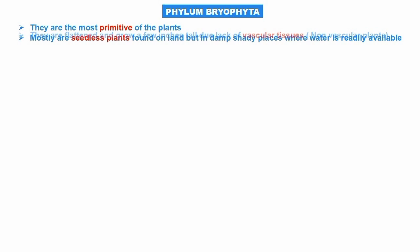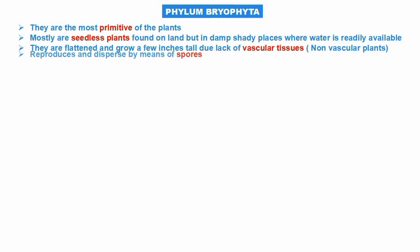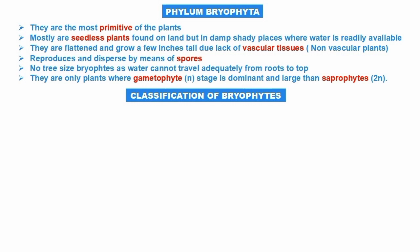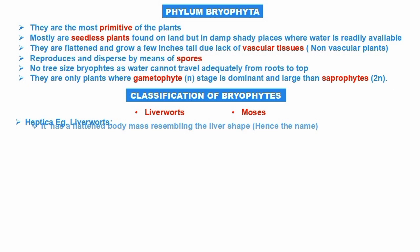Next we will talk about phylum Bryophyta. Bryophytes are the most primitive of the plants. They are mostly seedless plants found on land but in damp, shady places where water is readily available. They are flat and grow only a few inches tall due to the lack of vascular bundles, hence they are non-vascular plants. They reproduce and disperse by means of spores. Because water cannot travel adequately, only the gametophyte (n) stage is dominant and larger than the sporophyte (2n).